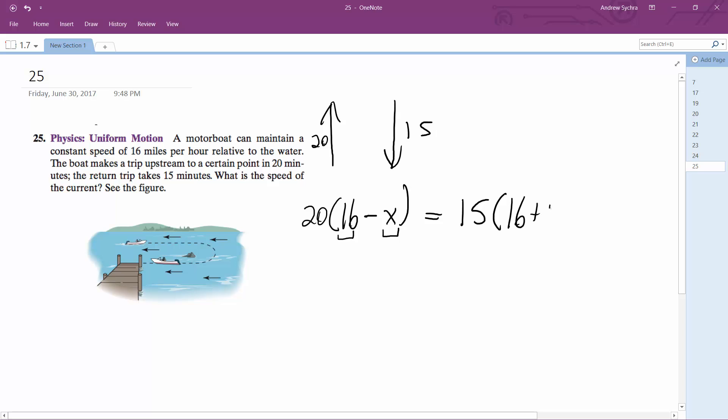So this becomes 20 times (16 minus X) equals 15 times (16 plus X). That's 320 minus 20X equals 240 plus 15X.